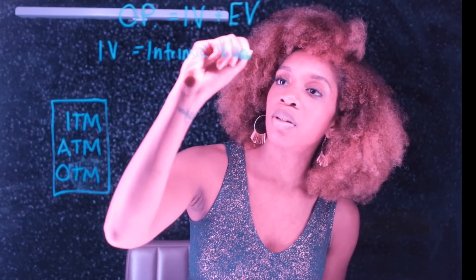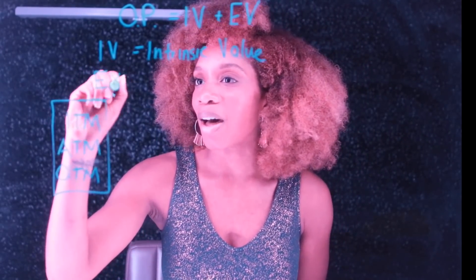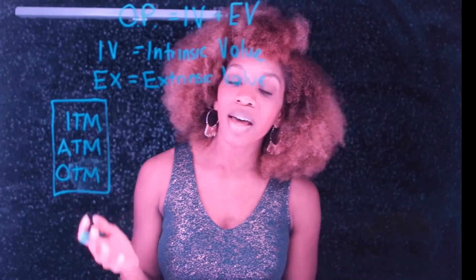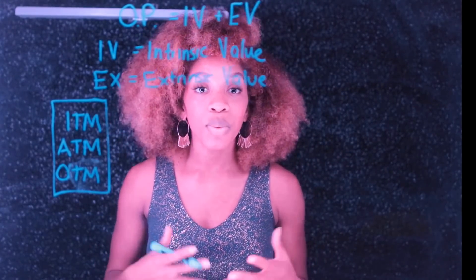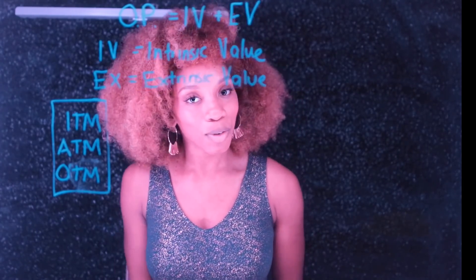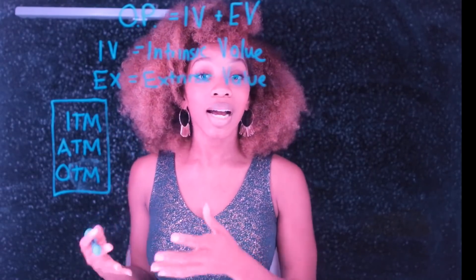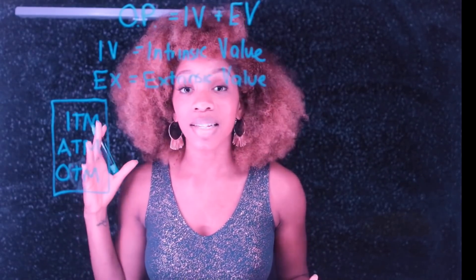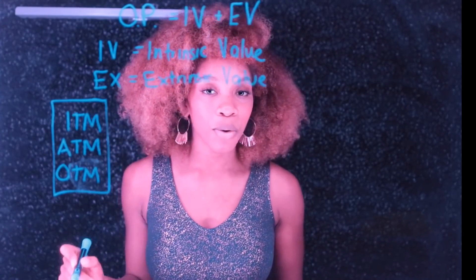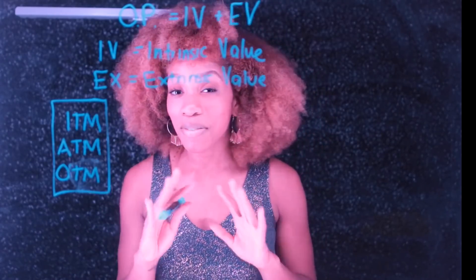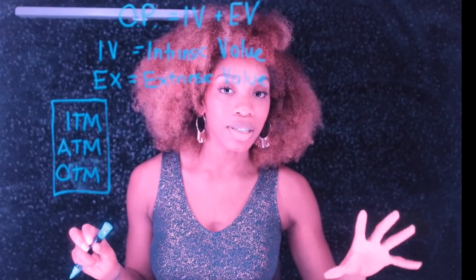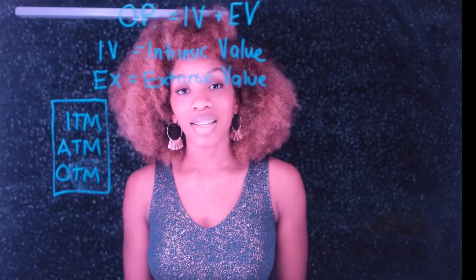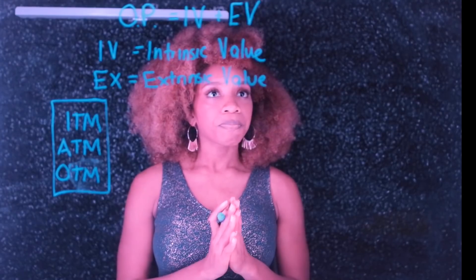And then you have extrinsic value, which basically talks about time. Remember, with options contracts you have an expiration date by which you can be correct. The extrinsic value tells you how much value is in that contract based on the time that's left until expiration. Extrinsic value is very important when talking about long options, because when you buy outright, extrinsic value works a lot quicker — and that's how you can end up with a contract that's basically deemed worthless.